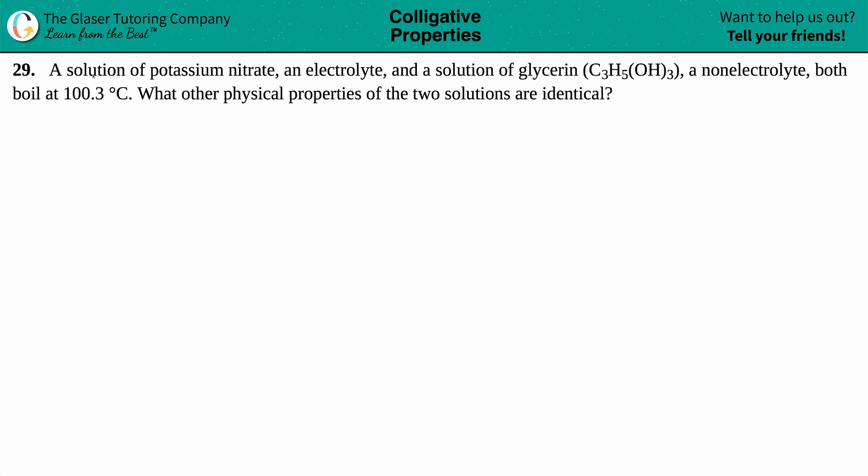Number 29. A solution of potassium nitrate, an electrolyte, and a solution of glycerin, which is C3H5OH3, a non-electrolyte, both boil at 100.3 degrees Celsius. What other physical properties of the two solutions are identical?